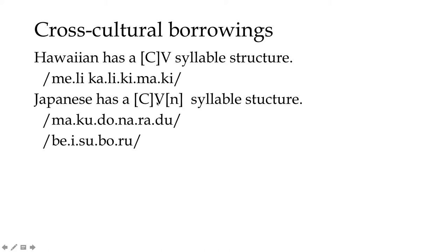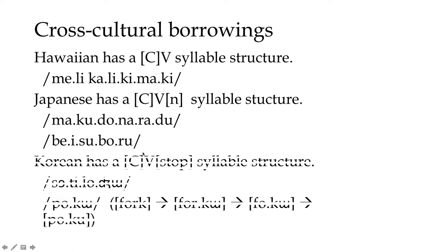Japanese has a slightly more complex syllable structure — you can have 'n' in the coda, but like Hawaiian there are no consonant clusters. So 'McDonald's,' three syllables in English, becomes 'Makudonarudo,' six syllables in Japanese. 'Baseball,' two syllables in English, becomes 'besuboru,' five syllables in Japanese.